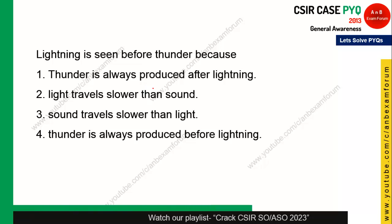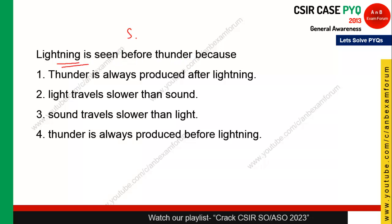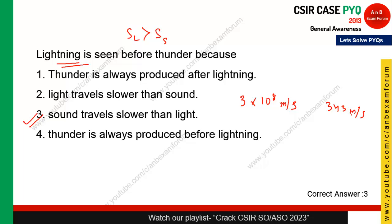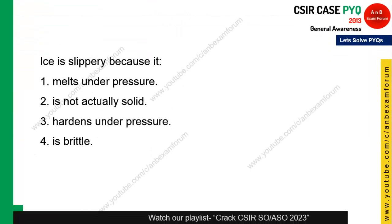The next question: lightning is seen before thunder — a simple one from school days. Lightning is seen before thunder because the speed of light is faster than the speed of sound. The option here states it the other way: speed of sound is slower than speed of light, so option 3 is correct. For reference, speed of light is 3 × 10⁸ m/s, whereas speed of sound is just 343 m/s — a huge difference.